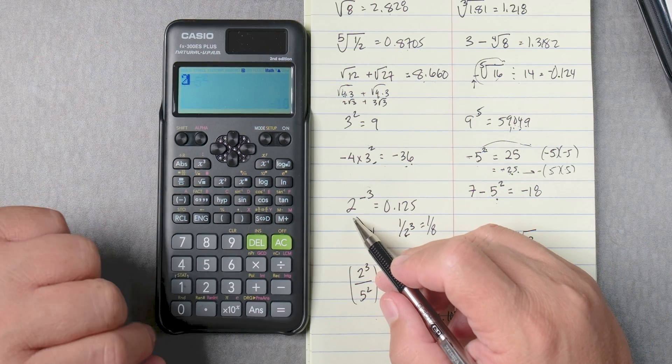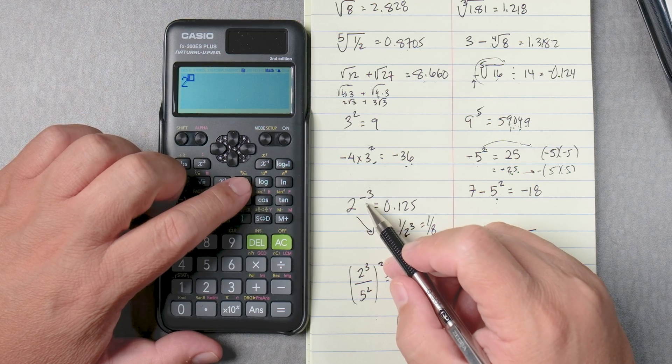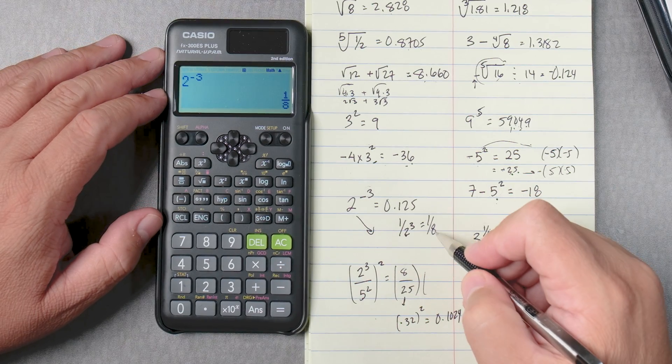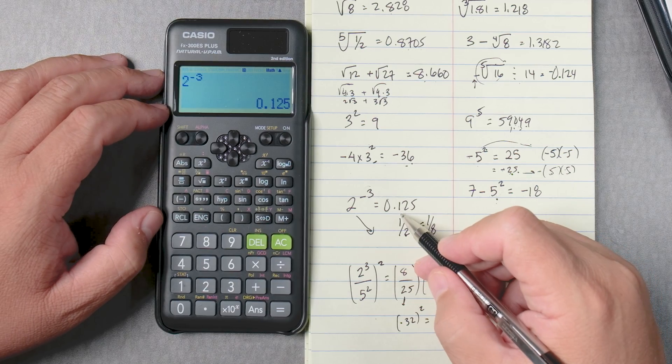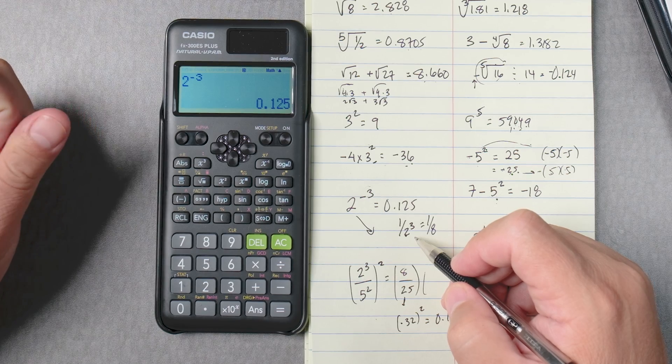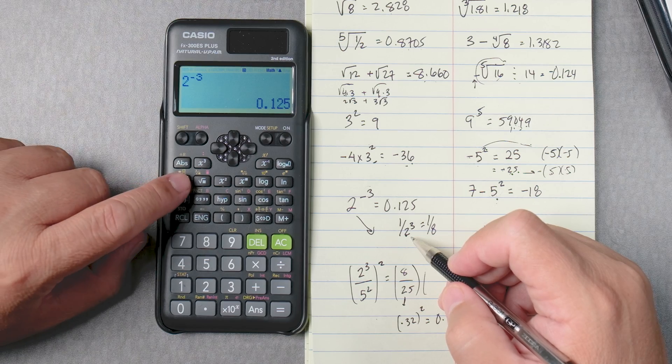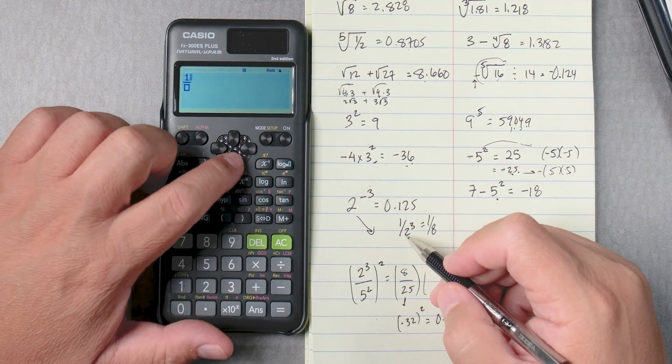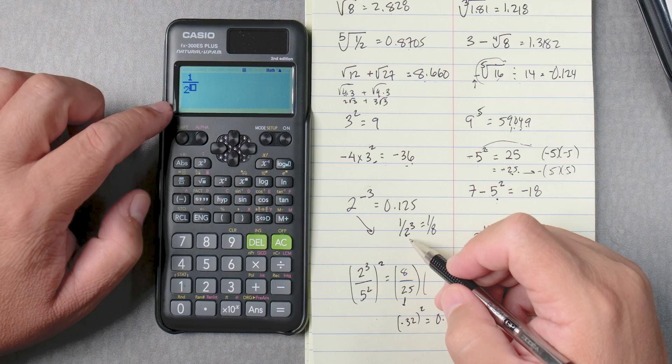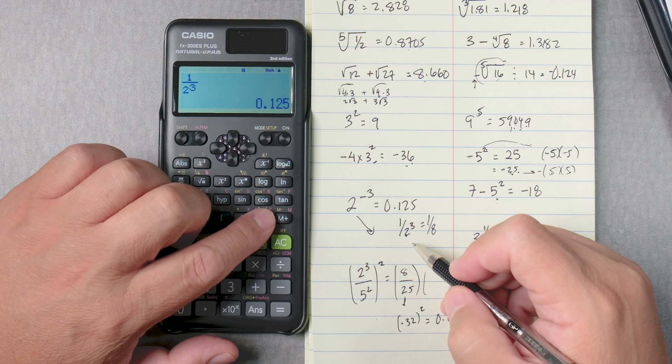This one, it says 2, and then X to give you the power. What power is that? Negative 3 equals 1 over 8. And if I wanted a number, 0.125. Let's see. Can we do it in another way? Can we say a fraction, 1, and then move this down? 2, and then to the power of 3 equals 1 over 8. Still, you can change it, see? 0.125.